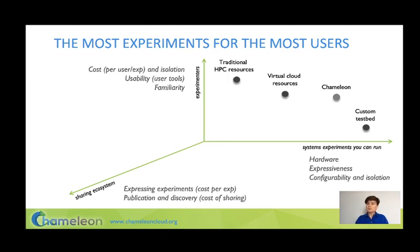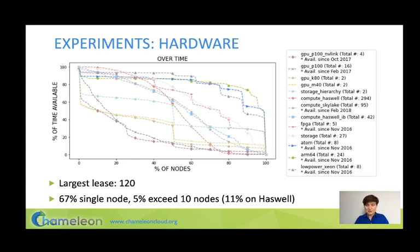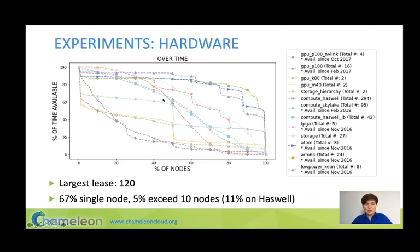So this is the layout of my talk: the broadest range of experiments we can support and how we do that, how we support many users, and our support for sharing. Starting with experiments, hardware is very important. The graph here shows what percentage of a specific resource type was available over what percentage of time. The most utilized resources are the various GPU clusters, followed by our memory hierarchy nodes with almost a terabyte of memory and non-volatile memory, as well as SSDs. The center is occupied by large-scale resources — Haswells and Skylakes — and the least utilized are ARMs, Atoms, and low-power Xeons.